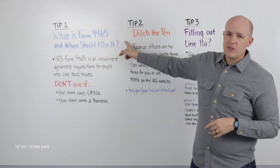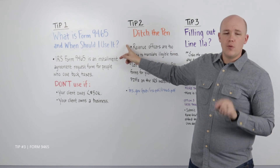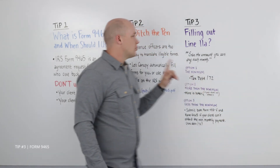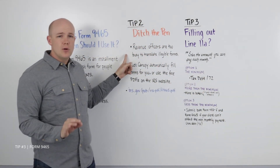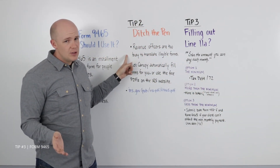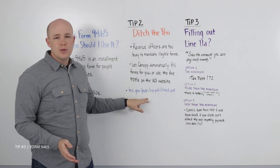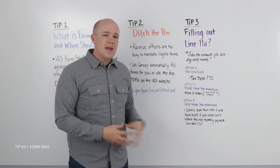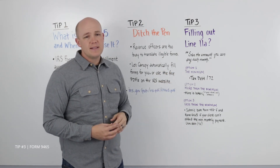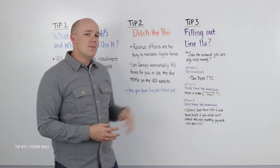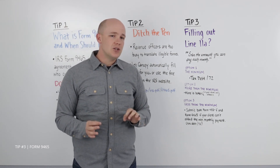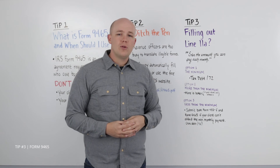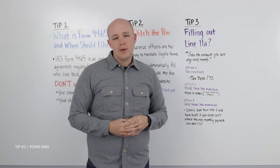So let's recap. Use Form 9465 to set up an installment agreement for a client who owes more than $50,000 and doesn't own a business. Your form should always be easy to read — if you don't use software to automatically fill out your 9465, use your computer to fill the form out online. The minimum monthly payment is the client's debt divided by 72. Paying more than the minimum will help lessen penalties and interest, and paying less than the minimum will require a Form 433-F along with your installment agreement request.